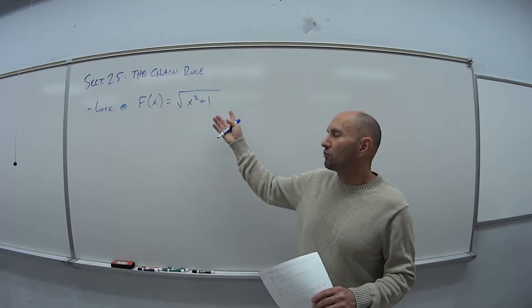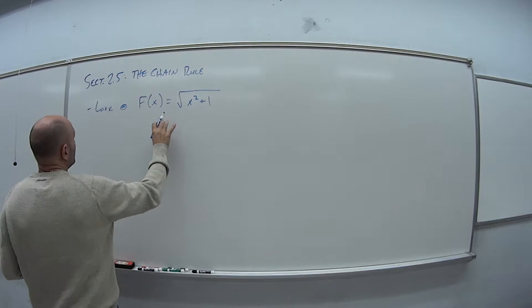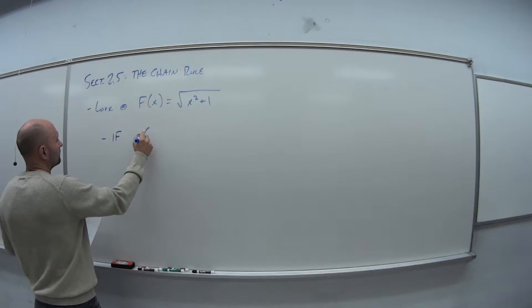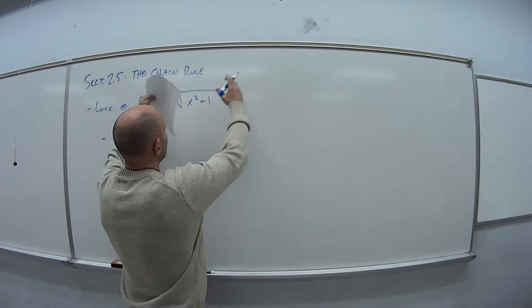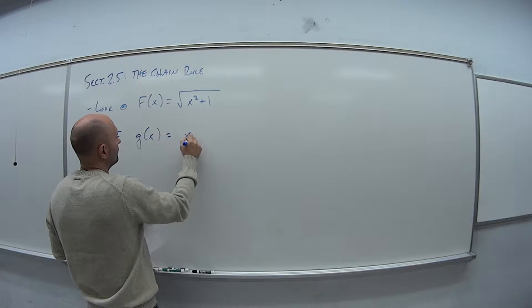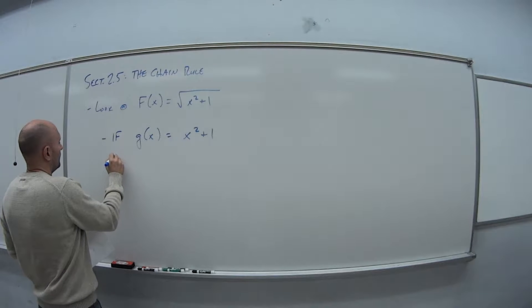But recall as well when I was telling you guys about decomposing a function, and that's what we can do here. We can rewrite this f of x, so let's say that if g of x - because remember when we decompose a function we work from the inside and work our way out - so if we say that g of x is what's inside of here, x squared plus 1.